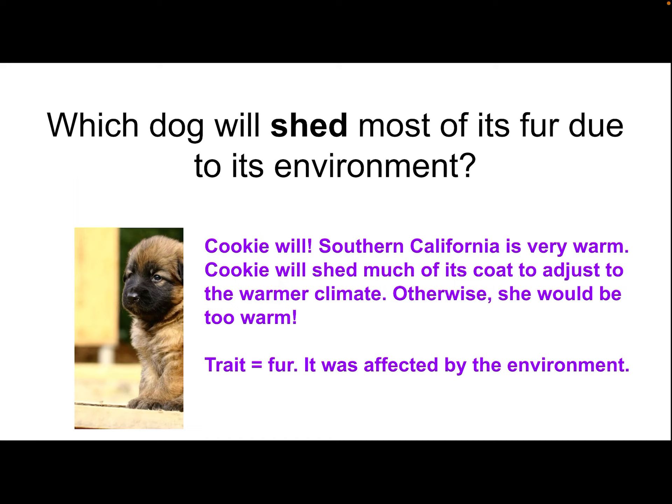Which dog will shed most of its fur due to its environment? Cookie will. Southern California is very warm. Cookie will shed most of its fur to adjust to the warmer climate — otherwise she would be too warm. Cookie, being in a warm place, is going to shed most of its fur. The trait, again, is fur, and that fur was affected by the environment.